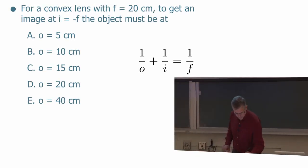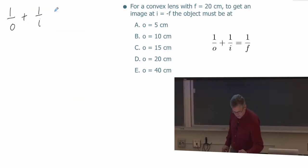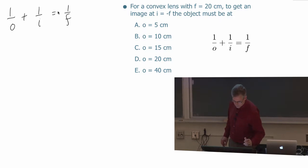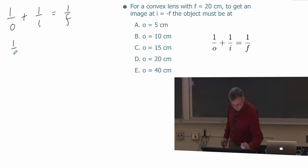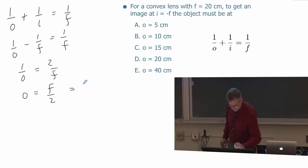Let's go back and try to work this one out. We have 1 over O plus 1 over I equals 1 over F. We're going to set I equal to minus F. So 1 over O minus 1 over F equals 1 over F, or 1 over O equals 2 over F, or O equals F over 2. F is 20 centimeters, so 10 centimeters is the correct answer.